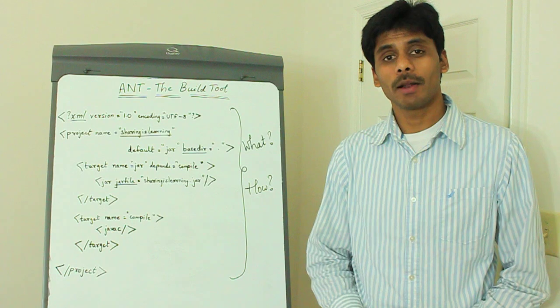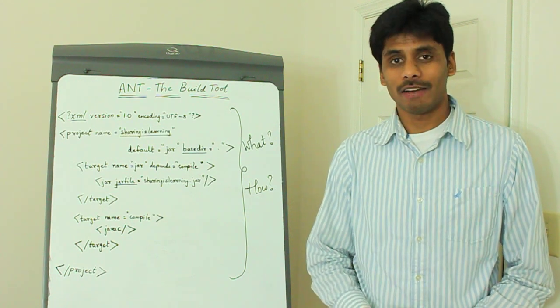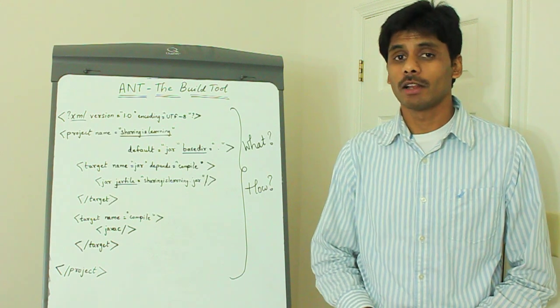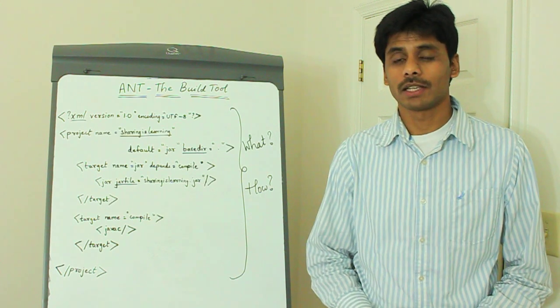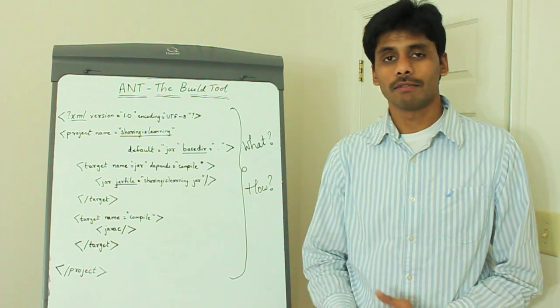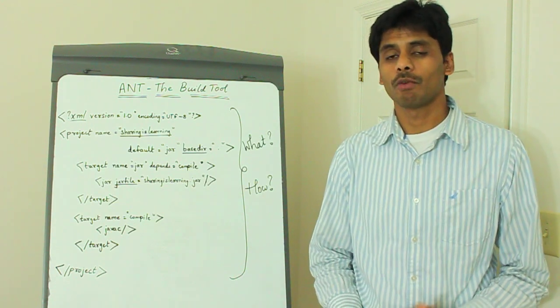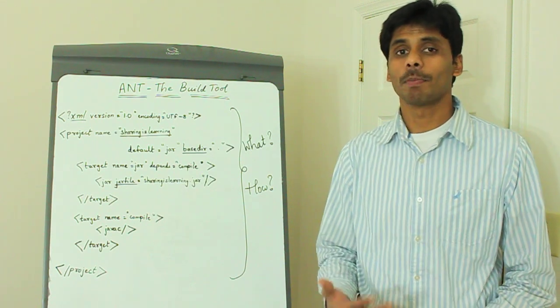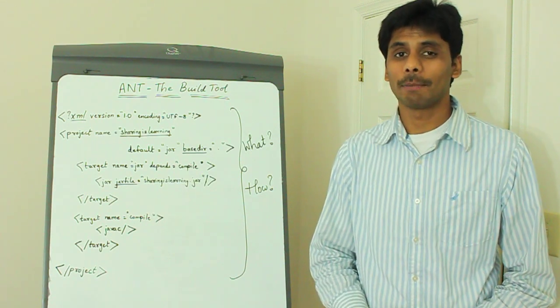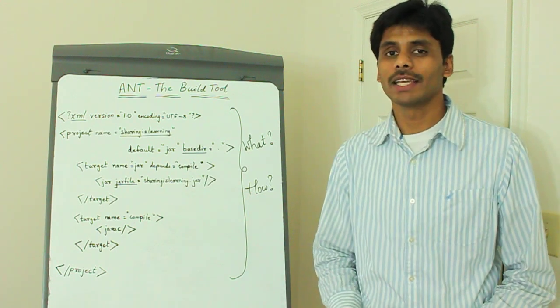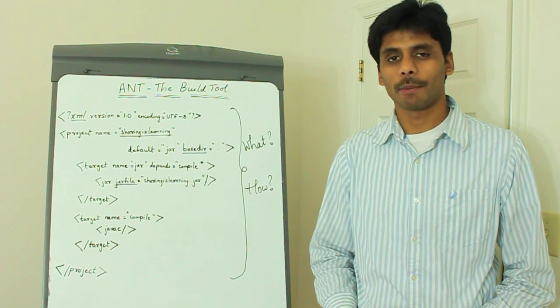As a J2EE developer, you'll be compiling your Java classes, packaging these classes into jar files, and then packaging these jar files along with other web components like JSP files, servlets, and web deployment descriptors into a WAR file which stands for web archive. Then you package this WAR file along with the deployment descriptors required by your application servers into an EAR file which stands for Enterprise Archive.